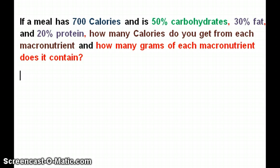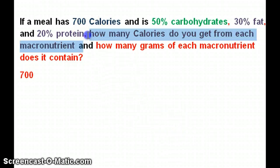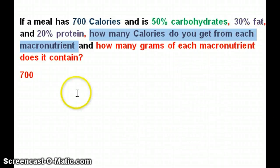However, there probably are times where you would actually have to calculate this in the future depending on what your graduate program is. In this question I broke it down for you: how many calories you get from each macronutrient and how many grams. To find the grams, first I need to know how many calories I get from carbohydrates and how many calories I get from fats — so do the first part: calories from each macronutrient.